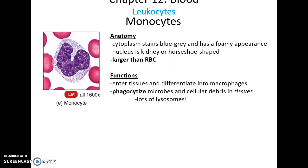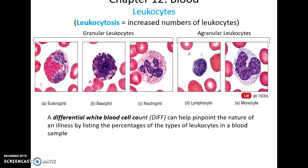Monocytes are larger than red blood cells, with a kidney-shaped or horseshoe-shaped nucleus and a gray-bluish cytoplasm. They do not function in the blood, but when they enter tissues, they become macrophages, and macrophages will engage in phagocytosis — they engulf microbes and soil debris and dispose of them using lysosomes.